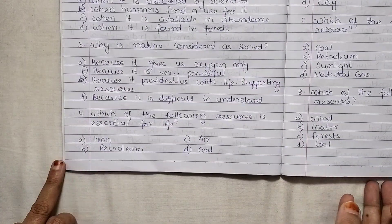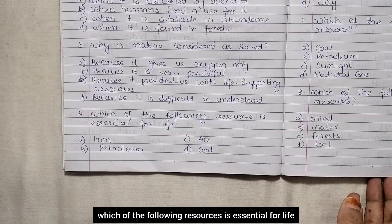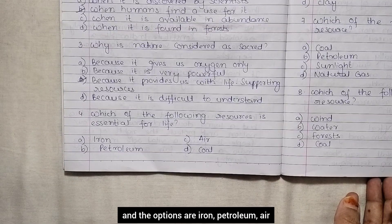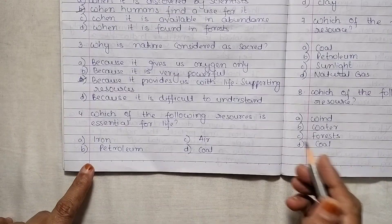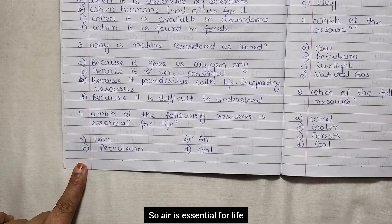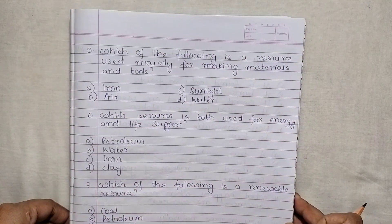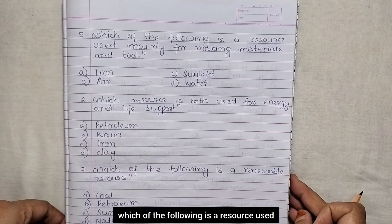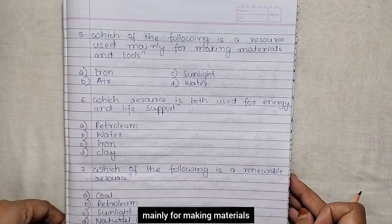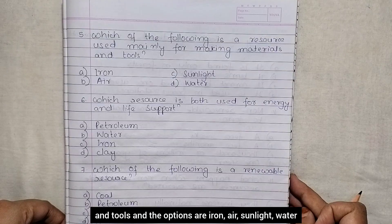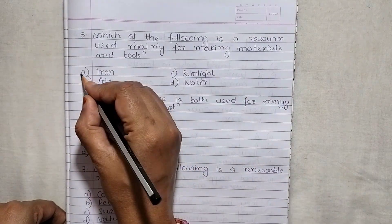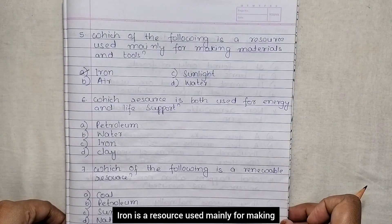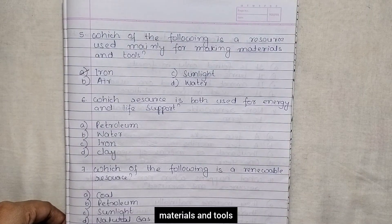Next: which of the following resource is essential for life? The options are iron, petroleum, air, coal. Air is essential for life. Next: which of the following is a resource used mainly for making materials and tools? The options are iron, air, sunlight, water. Iron is a resource used mainly for making materials and tools.